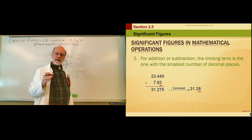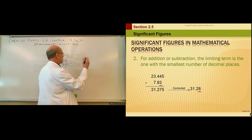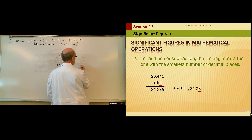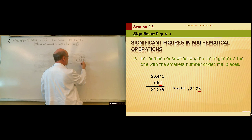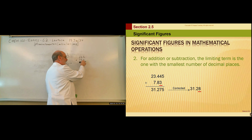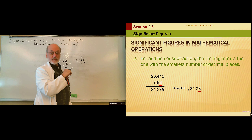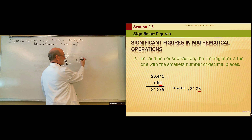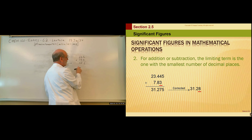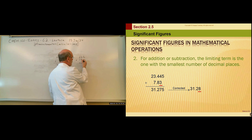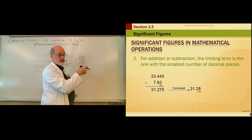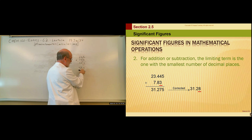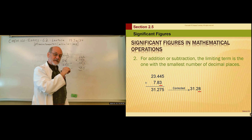What if you have a number ending in zero with no explicit decimal, like 150? If we add 322 and 150, we get 472. The zero in 150 is not significant because there's no explicit decimal. We're limited to the ones position — looking to the right, 7 is greater than 5, but since 150's zero isn't significant, we replace that position with a placeholder zero. So the answer is 470, and we actually have two significant figures.